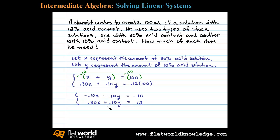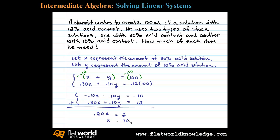We can see the variable Y is lined up to eliminate. Adding the two equations together, we're left with 0.20X = 2. Dividing by 0.20, we get X = 10, or 10 milliliters of the 30% acid solution.